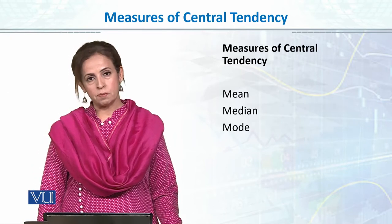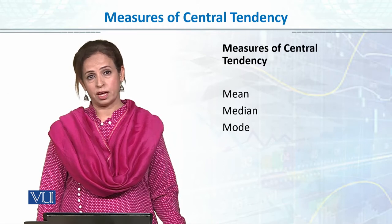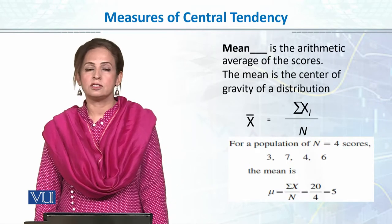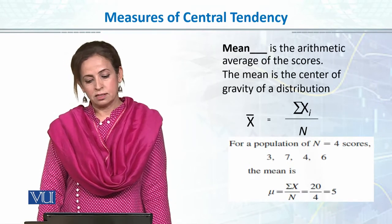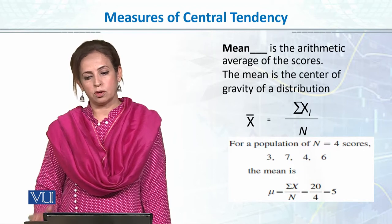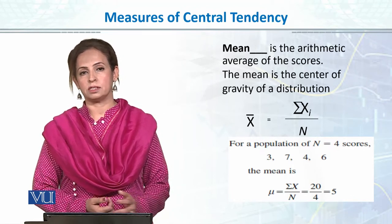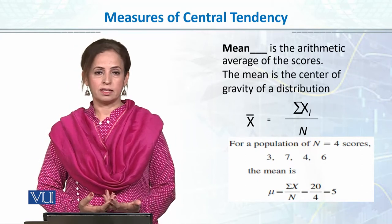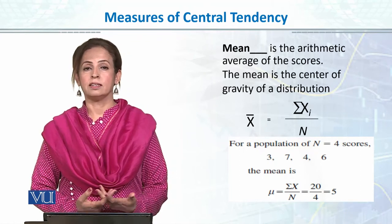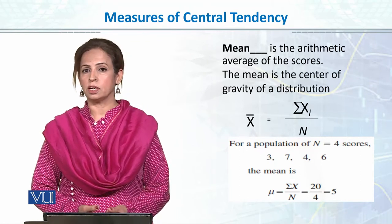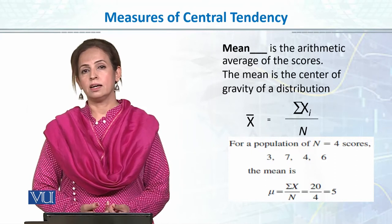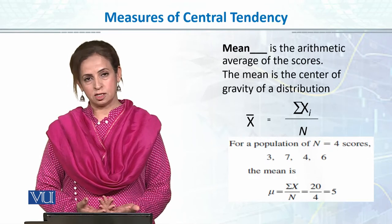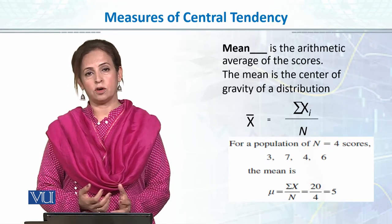We will talk about all three and then compare them — how, when, and where we have to use which measure of central tendency. For instance, mean is the center of gravity of the distribution and is mostly used in parametric statistics. When we go ahead and study hypothesis testing, we usually compare groups, draw inferences, and mean is the main unit — which is what we use when we do t-tests or F-tests. Mean is a simple concept; it is the arithmetic average of the distribution.